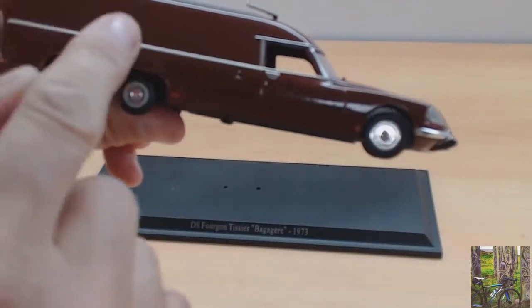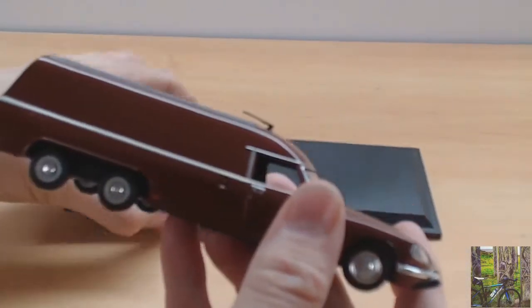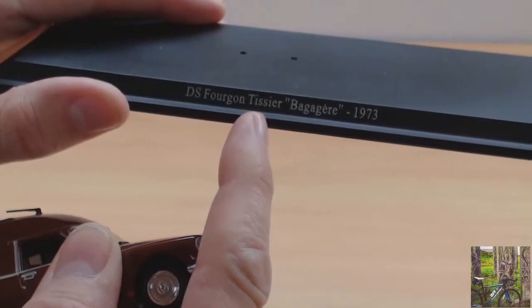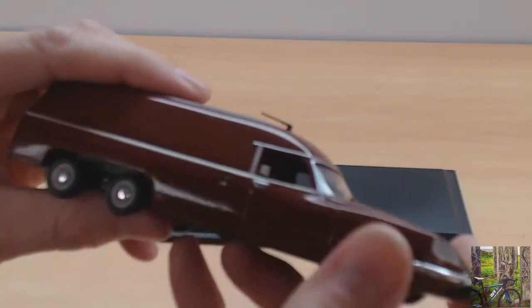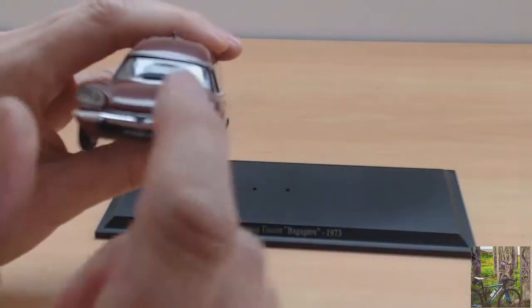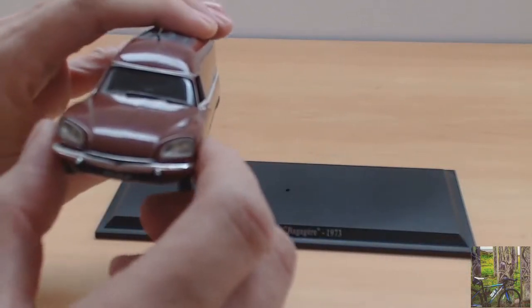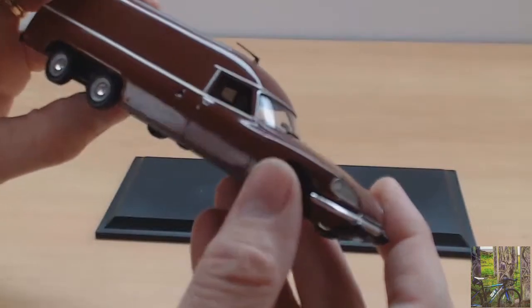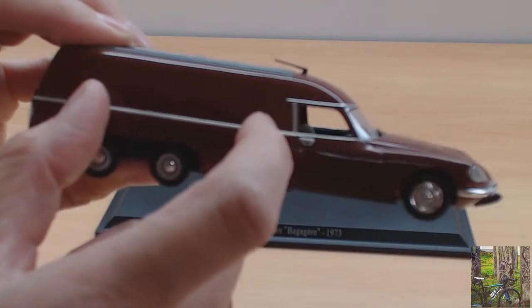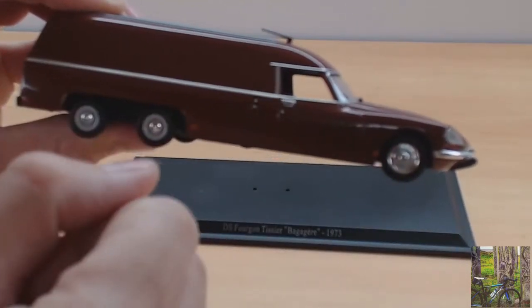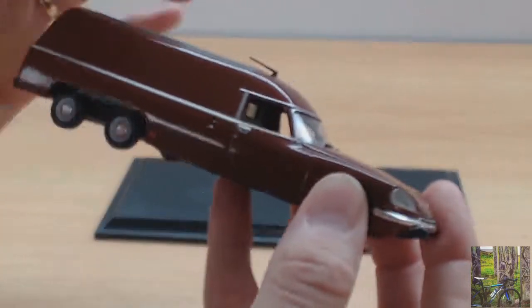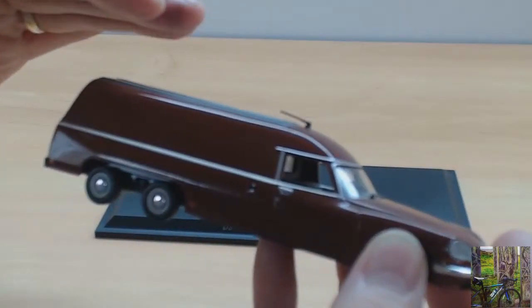If you go onto YouTube and put in the words DS Fourgon Tissier, you'll see lots of different variations of the same theme on these. And some of the newer vehicles, slightly newer vehicles, which have been extended as well. And so they're mainly ambulances. Because you can imagine you can get a person lying down there quite easily with somebody who's looking after them. So it's really quite good. And some of the ambulances are a little bit higher as well.